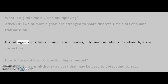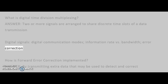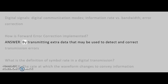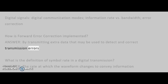Digital signals, digital communication modes, information rate versus bandwidth, error correction. How is forward error correction implemented? Answer: By transmitting extra data that may be used to detect and correct transmission errors.